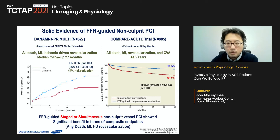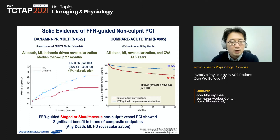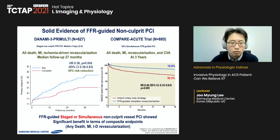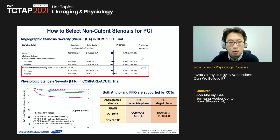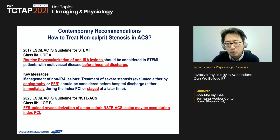Two representative trials — DANAMI-3 PRIMULTI and COMPARE-ACUTE — provide solid evidence for FFR-guided non-culprit vessel PCI in STEMI patients. DANAMI-3 PRIMULTI compared staged FFR-guided non-culprit PCI with culprit-only PCI; COMPARE-ACUTE compared immediate non-culprit PCI guided by FFR versus culprit-only PCI. In both trials, FFR-guided staged or simultaneous non-culprit PCI showed prognostic benefit over culprit-only PCI. Current guidelines support the use of FFR to evaluate non-culprit vessel stenosis even in the acute phase of myocardial infarction, with FFR below 0.80 supported by multiple randomized controlled trials.